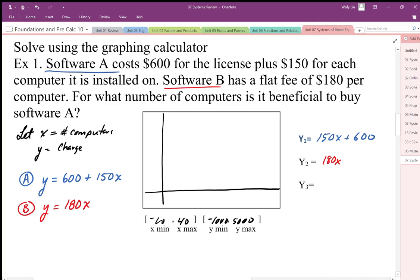As I graph this, my first equation starts at $600 with a slope going up, and the other one starts from zero going up steeper. We have an intersection point that represents our solution.